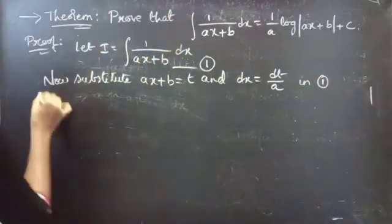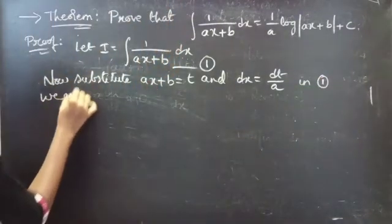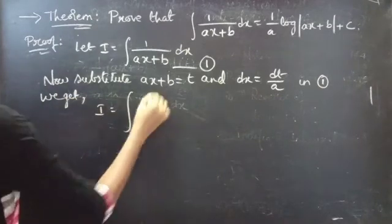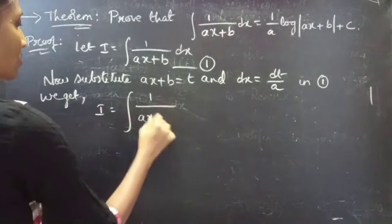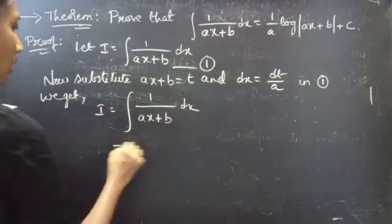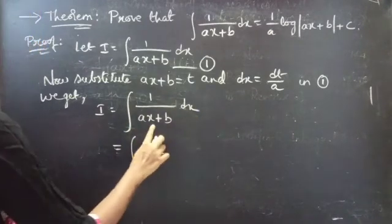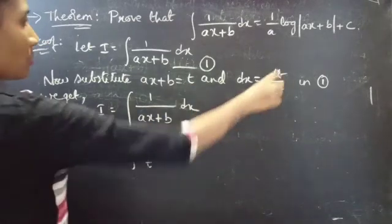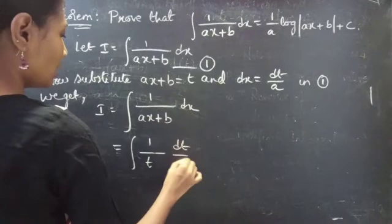Now substitute ax plus b equals to t and dx equals to dt by a in equation 1. Then we get i equals to integral 1 by ax plus b into dx equals to integral 1 by t and dx can be replaced by dt by a.